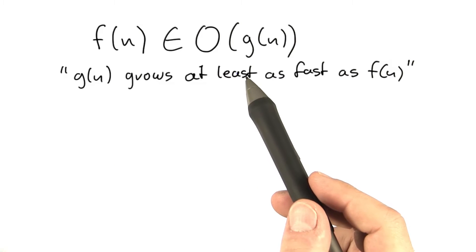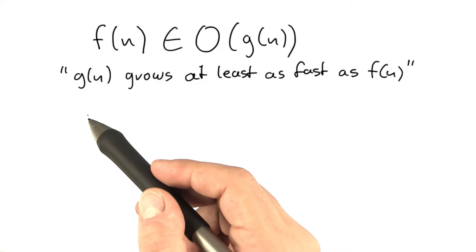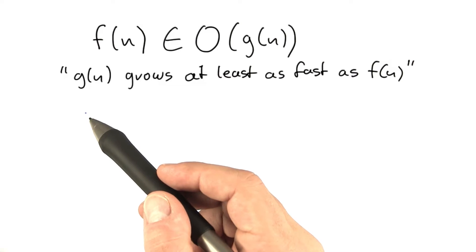So Big O notation is very useful because we can use it to concentrate just on the fastest growing part of a function and even leave out all of the involved constants. So I now want to show you a few examples to make this more concrete.